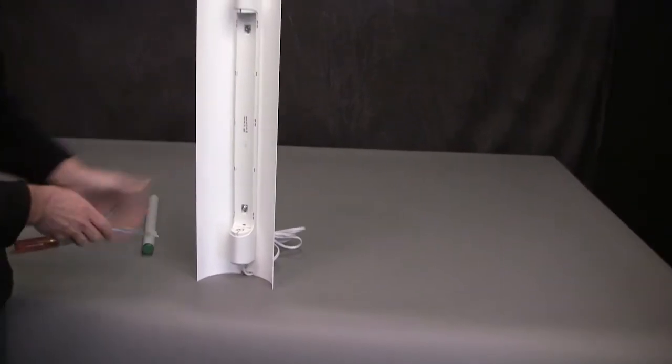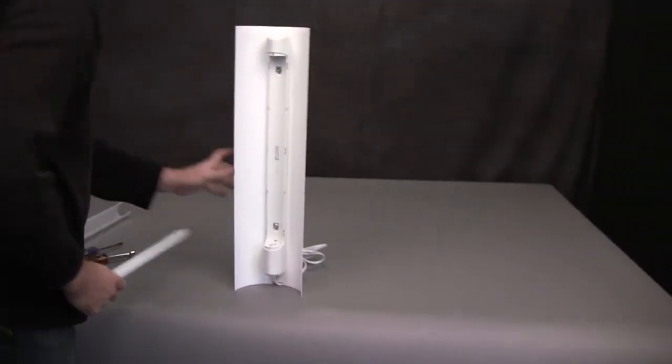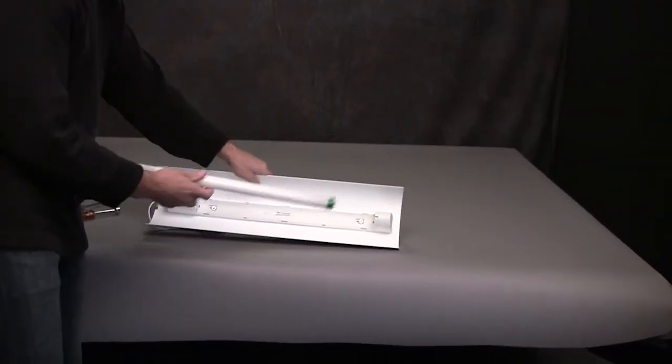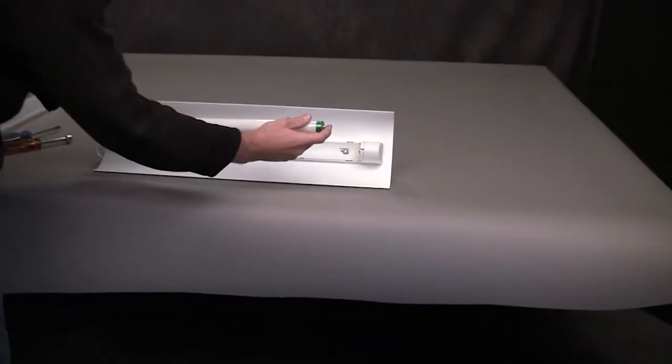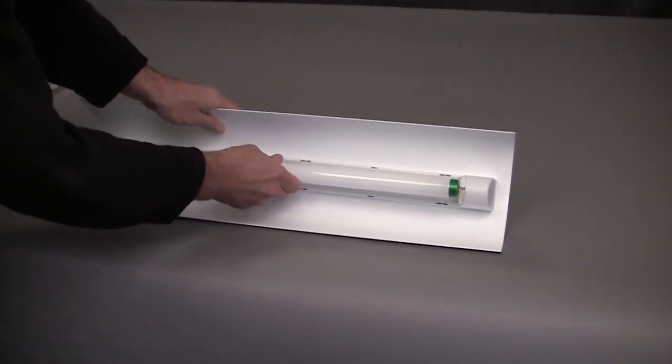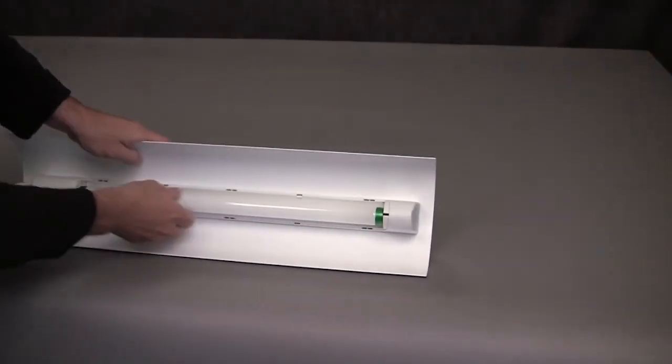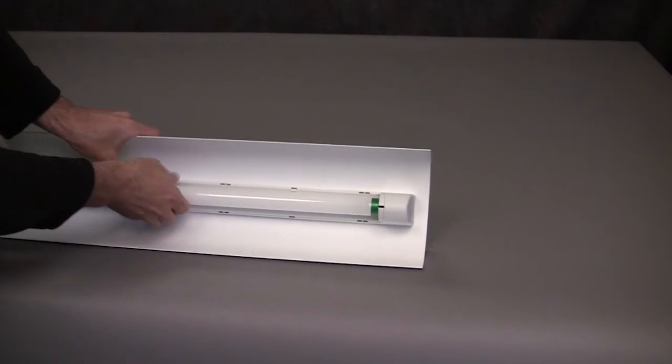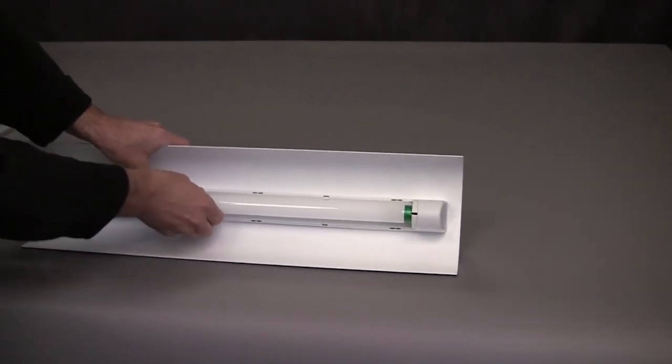All we need to do is install the bulb and the diffuser and it is done. So you take the bulb, line up the pins on either side with the little groove in the lamp and push it down. Give it a little bit of a quarter turn until it clicks into place.